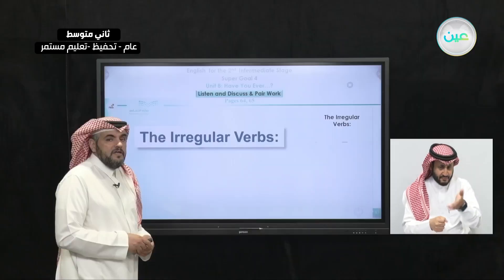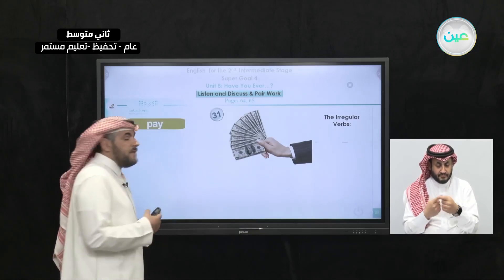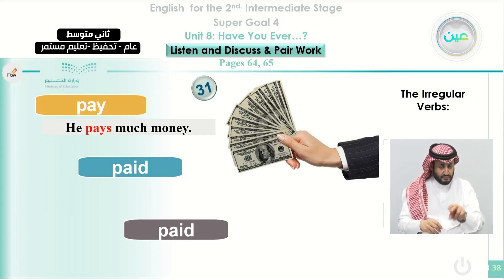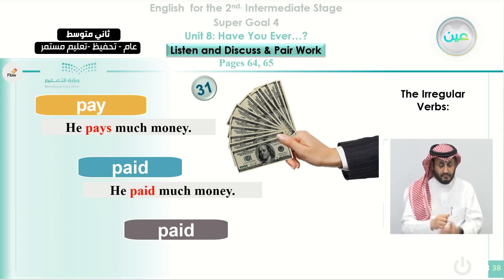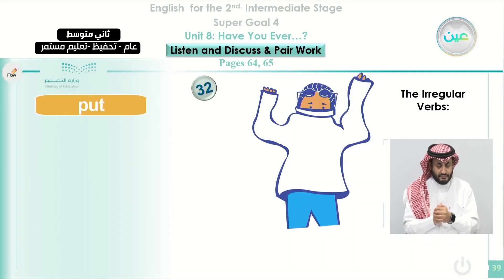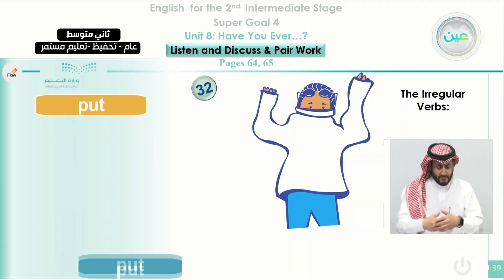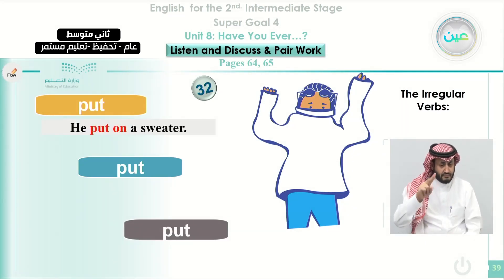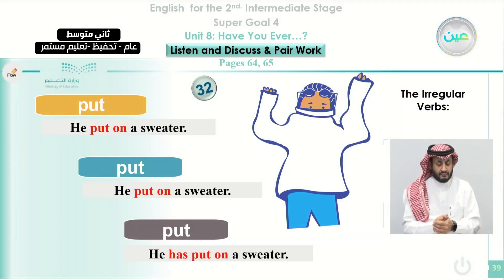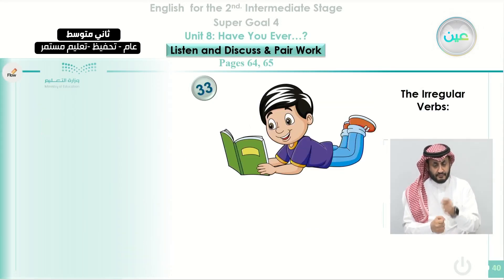We move to the irregular verbs. Verb 31: 'pay' — past: 'paid,' past participle: 'paid.' He pays much money (present); he paid much money (past); he has paid much money (present perfect, no specific time). Verb 32: 'put' — past: 'put,' past participle: 'put.' He puts on a sweater (present); he put on a sweater (past); he has put on a sweater (present perfect).